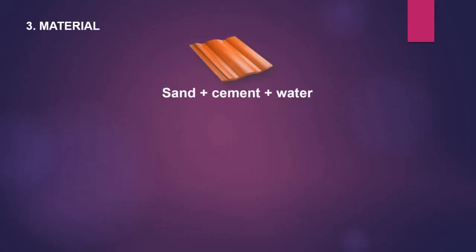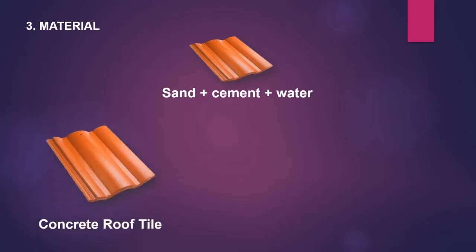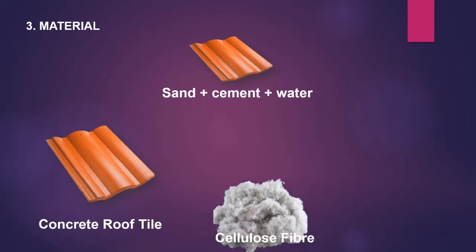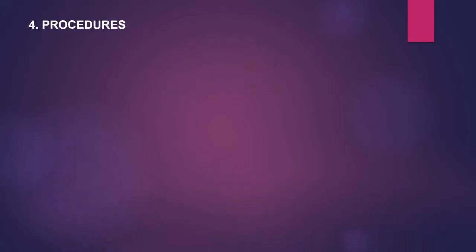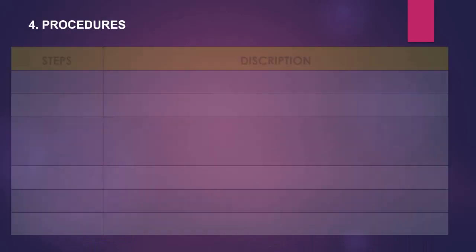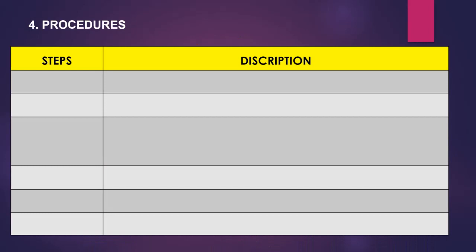The concrete roof tile is made from a mixture of sand, cement, and water, molded and heated together to make a roof tile. To make the composite roof tile, there are several main materials required: concrete roof tile, cellulose fiber, and adhesive spray.